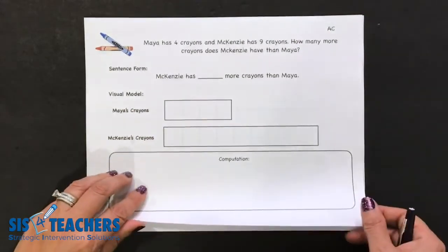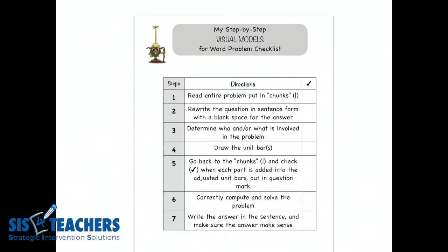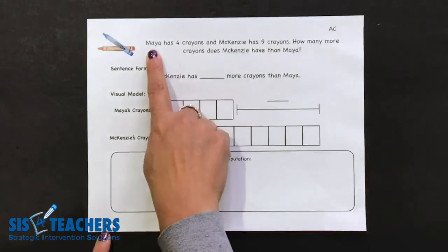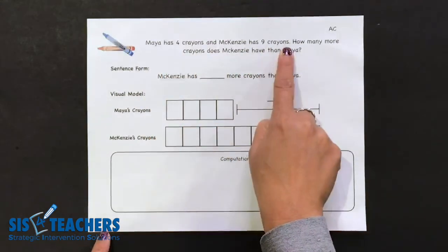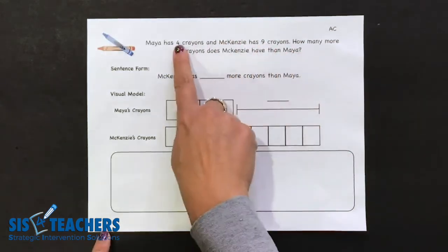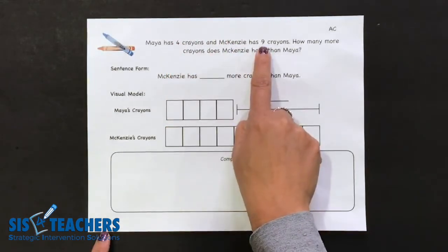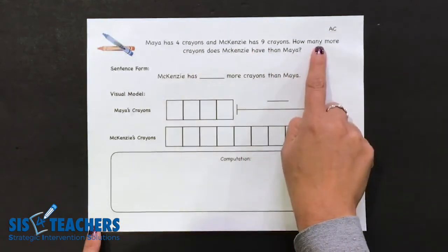Let's take a look at our step-by-step checklist to see the seven steps that we want first graders to be able to go through. The first step is to read the entire problem and put in chunks when new pieces of mathematical information come about. We'll start by reading the whole problem: Maya has four crayons and Mackenzie has nine crayons. How many more crayons does Mackenzie have than Maya? One problem with first graders is they see two numbers and they're going to add or subtract without understanding what this type of problem is actually asking.